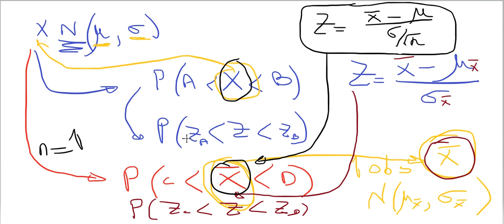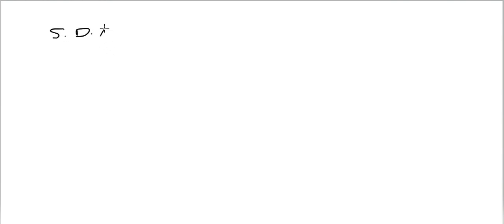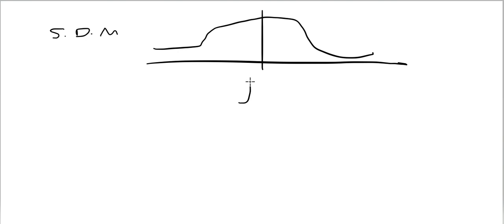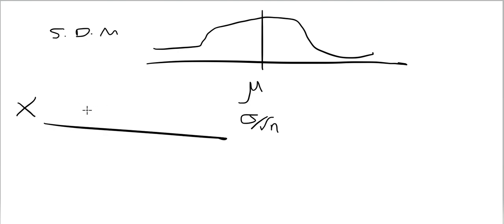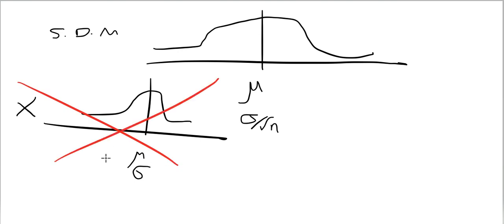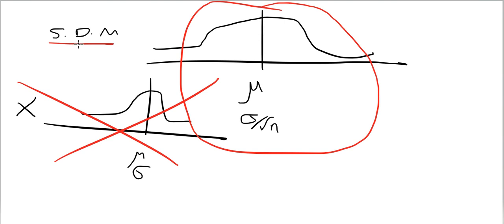The sampling distribution of the mean has a normal distribution, centered at μ, with standard deviation σ/√n — and this is true as long as X itself had a normal distribution. However, it turns out that even if X does not have a normal distribution, you can still obtain a normal sampling distribution of the mean, provided n is greater than or equal to 25. More on that in the next video.